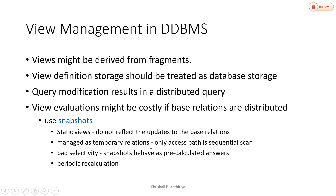A view is managed as a temporary relation. The only access path is a sequential scan. View management is only used to view or extract information from the actual table — it only shows information from the table. It is not a permanent relation; it is a temporary relation. This leads to bad selectivity, and the view behaves as a snapshot with pre-calculated answers.